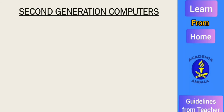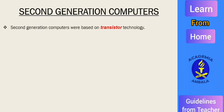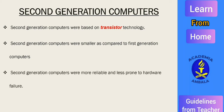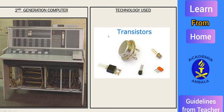Second generation computers were based on transistor technology instead of vacuum tubes. They were smaller as compared to first generation computers, more reliable, and less prone to hardware failure. They also generated less amount of heat. Here you can see the image of second generation computers, which were smaller in size, and the technology used was transistors.